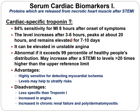If another AMI happens within one week, Troponin T cannot be used diagnostically. It can also be elevated in unstable angina, which is why it is not entirely specific for AMI and necrosis. It is considered abnormal if it exceeds the 99th percentile of the healthy population's distribution, and may increase after STEMI to levels 20 times higher than the upper reference limit.